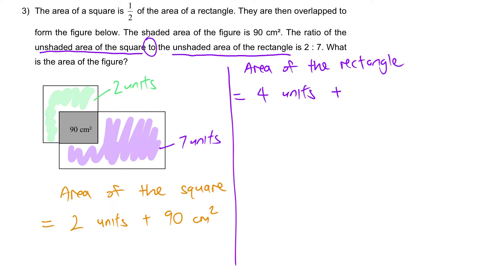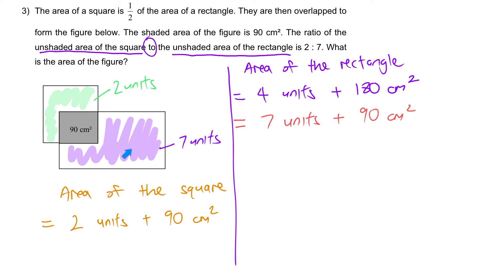At the same time, the area of the rectangle is also equal to 7 units plus 90 cm². So from these two expressions, can we figure out what one unit is?